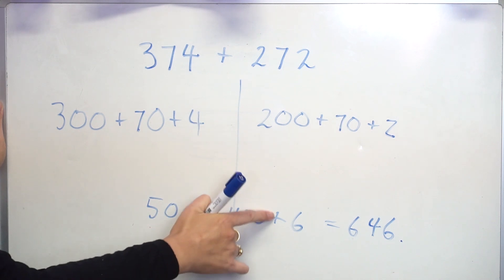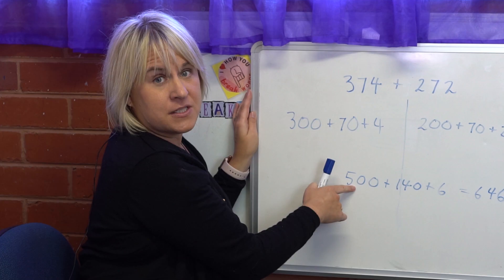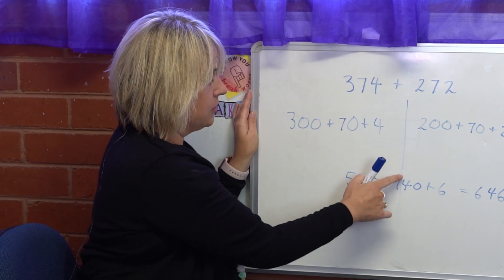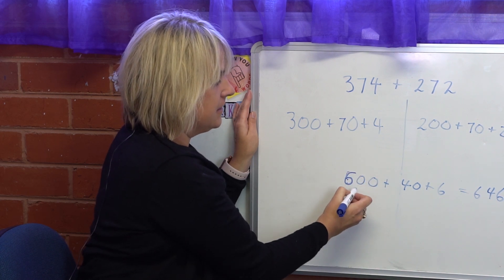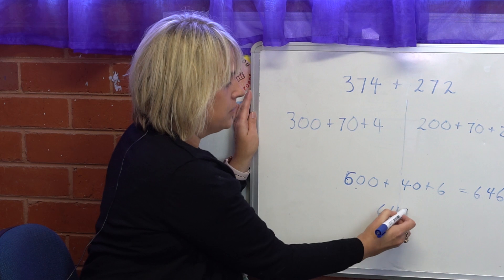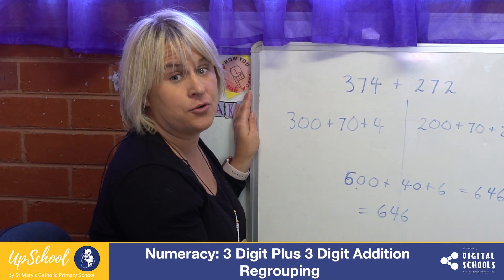Or I could also demonstrate that here this is my tens column and I have gone over 100, so I do want to take this 100 and put it over in the 100s column. So I can simply just take that out and change this one to a 6, 646. There is a different strategy in order to solve addition.